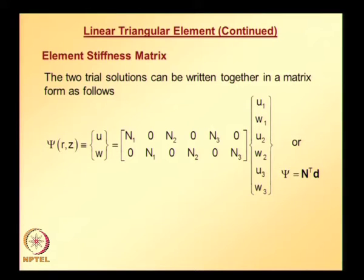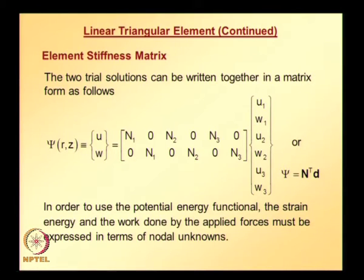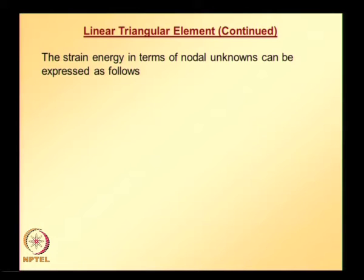In order to use the potential energy functional, strain energy and work done by the applied forces must be expressed in terms of nodal unknowns — that is U1, U2, U3, W1, W2, W3. Strain energy in terms of nodal unknowns can be expressed once we know the relationship between strains and displacements, since the potential energy functional is a function of strain and stress. We need to know what is the relationship between the trial solutions and the strains so that we can plug this into the definition of strain energy.